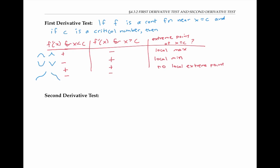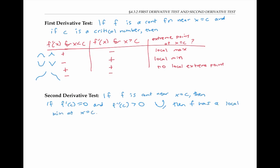The first derivative test is great because it lets us locate local extreme points just by looking at the first derivative. The second derivative test gives us an alternative for finding local max and min points by using the second derivative. Specifically, the second derivative test tells us that if f is continuous near x equals C, then if f prime of C is equal to zero and f double prime of C is greater than zero, then f has a local min at x equals C. If on the other hand, f prime of C equals zero and f double prime of C is less than zero, then f has a local max at x equals C.